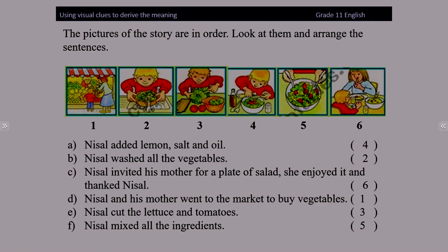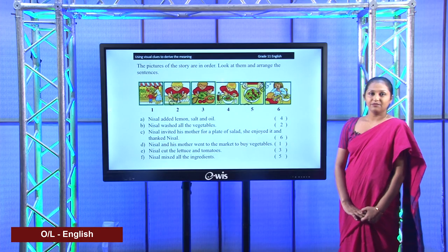Let's check the answers. The first picture shows: Nisal and his mother went to the market to buy vegetables. Two: Nisal washed all the vegetables. Three: Nisal cut tomatoes. Four: Nisal added lemon, salt and oil. Five: Nisal mixed all the ingredients. Six — the last step — Nisal invited his mother for a plate of salad. She enjoyed it and thanked Nisal. I hope you have done all correct.